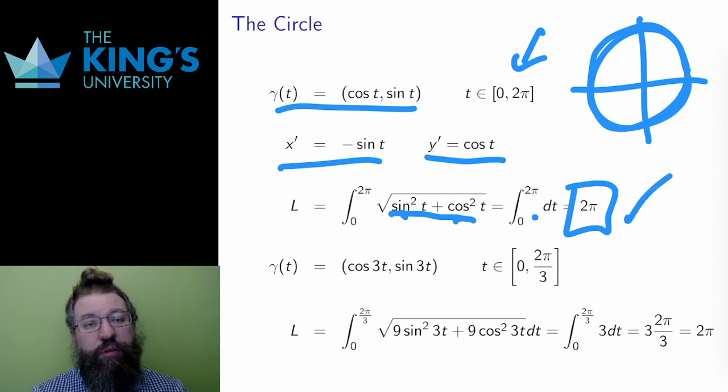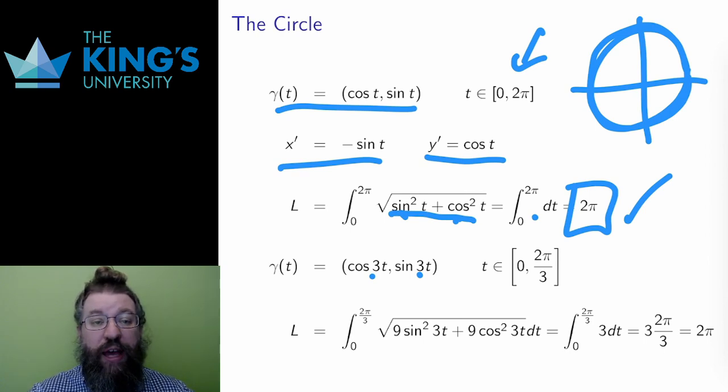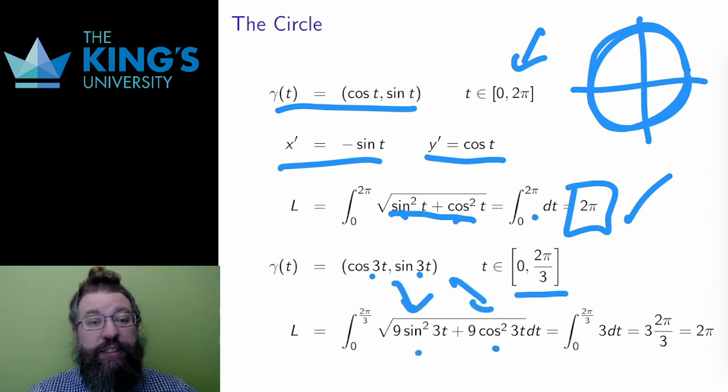What if the movement is different around the circle? Here is one of the alternative parametrizations for the circle. This one goes three times as fast, but it only has a third of the time for its domain. If I repeat the same steps, I again get a sine squared plus cosine squared in the integrand, and then that simplifies to 3.